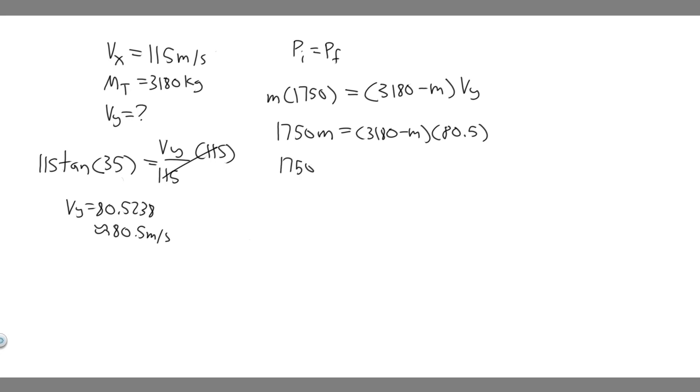So 1750 m is equal to, when you multiply these out, you'll get 255990, and then this is just going to be minus 80.5 m. Multiply these out, and then add it to the other side.